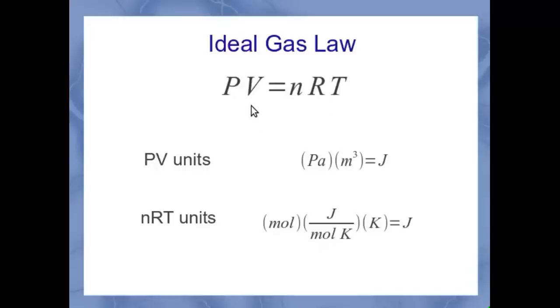Now similarly, the P and the V, if I multiply those together, the Pascal times the meters cubed. Remember, Pascal was a Newton per meter squared. So this is really a Newton meter, which is also equivalent to joules. So both sides of these equations express something about the amount of energy involved in the gas.